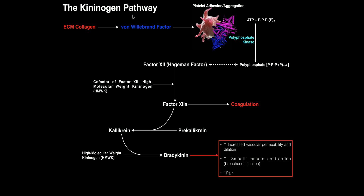Before we go into the clotting factor cascades, let's discuss the kininogen pathway. It's a really poorly understood hormonal pathway that is ultimately coupled with coagulation, and it leads to the production of bradykinin. In general, the kininogen pathway is more linked to the intrinsic pathway of coagulation, which we'll cover in the next video.